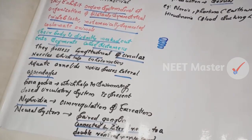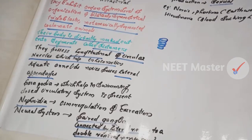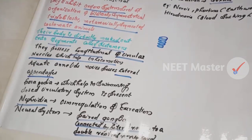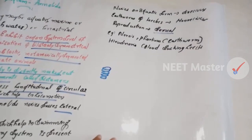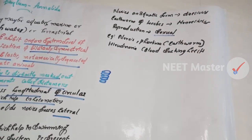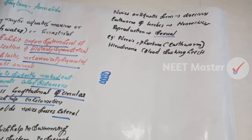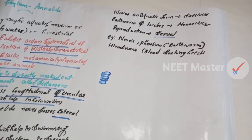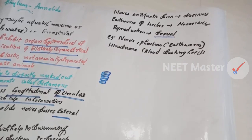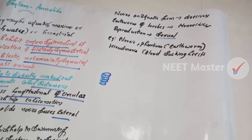The neural system has paired ganglia and a double ventral nerve cord. Aquatic forms like Nereis are dioecious (sexes separate), while earthworms are monoecious. Leeches are important examples. Reproduction can be sexual or asexual. I hope you enjoyed this video. Thank you!